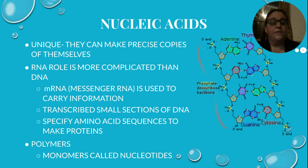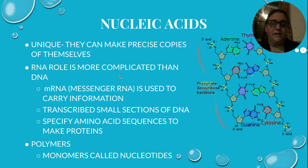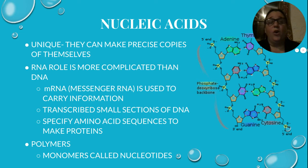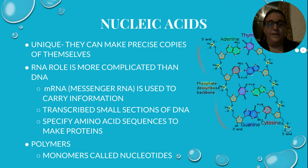When we inherit stuff from our parents, we don't inherit proteins, but we inherit the instructions to make those proteins — and that's basically what DNA is, it's a set of instructions. Nucleic acids are fairly unique because they can make precise copies of themselves; they are replicating. DNA is a little bit bigger than RNA, but RNA's role is more complicated. DNA just sits in the nucleus in eukaryotic cells and is basically the instructions to be copied from. RNA goes into the nucleus, is assembled, and carries the code that the DNA has.